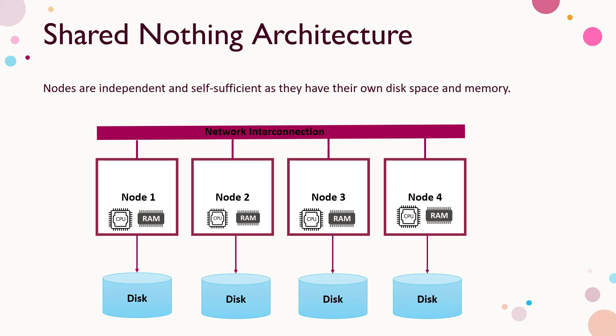What is shared nothing architecture? In shared nothing architecture, nodes are not sharing anything — as the name says. It's a distributed architecture pattern with multiple nodes connected via network, and they all have their own CPU, RAM, as well as storage, so they are all independent of each other. The disadvantage is that data needs to be shuffled between the nodes, which adds an overhead.